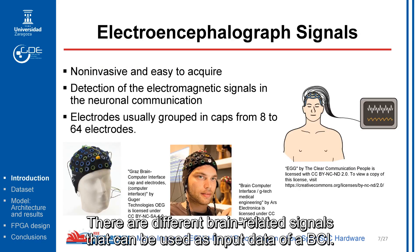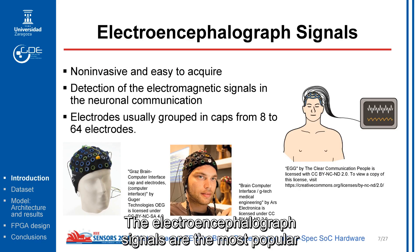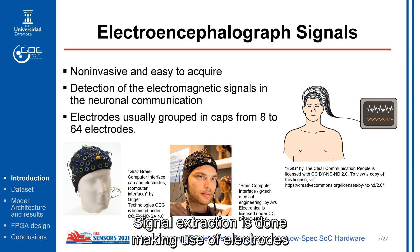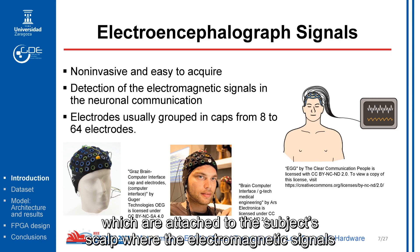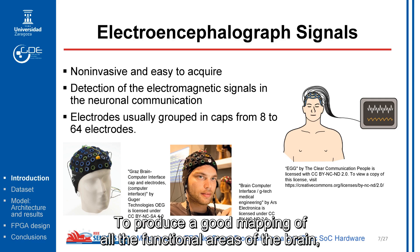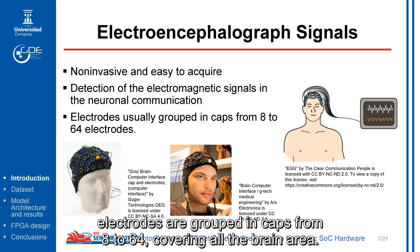There are different brain-related signals that can be used as input data for BCI. Electroencephalograph signals are the most popular, since they are non-invasive and easy to acquire. Signal extraction is done using electrodes attached to the subject's scalp, where electromagnetic signals are produced when the neurons or brain cells send messages to each other. To produce a good mapping of all functional areas of the brain, electrodes are grouped in caps from 8 to 64, covering all the brain area.